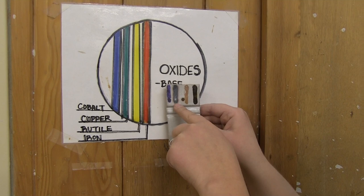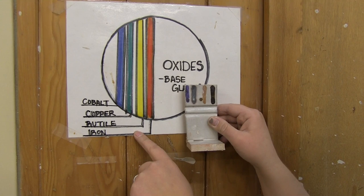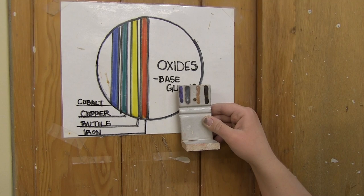Rutile is the third stripe, and that's where you get a lot of tans and yellows. It also has a tendency to make some glazes run heavily, so you want to be careful when using that on thick glazes.